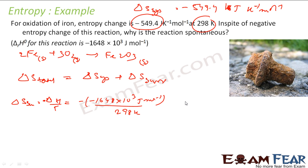This becomes minus of minus 1648 times 10^3 joule per mole divided by T. T is 298 kelvin. You saw that this comes out to 5530 joule per kelvin per mole. This is delta S of surrounding.